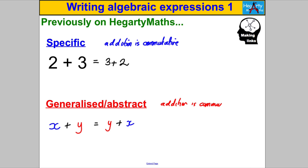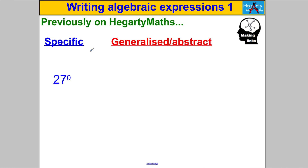It's much more useful than a specific example. With a specific example you might think it's something special about 2 and 3 that makes it the same as 3 add 2. But here, you can choose any number — a negative, a fraction, a whole number, a decimal — and you know you can swap the order of addition. That's the point of algebra: to allow us to make more generalized or abstract statements about things we already know about arithmetic.